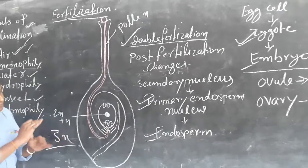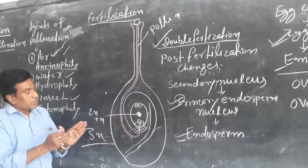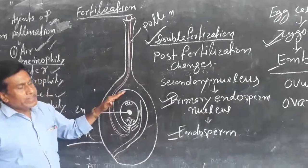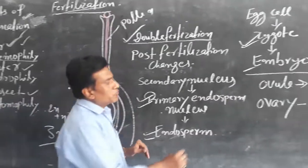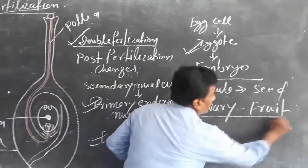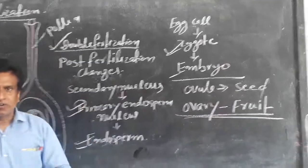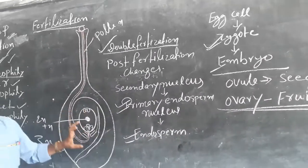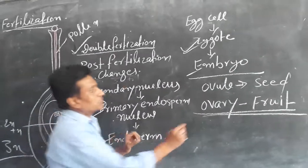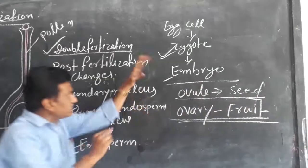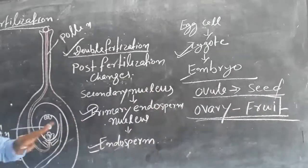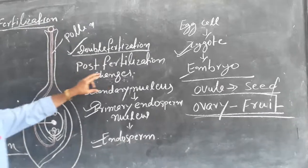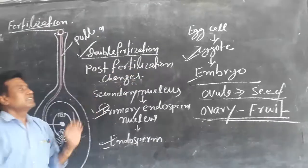After fertilization, this ovary develops into fruit, and this ovule develops into seed. All of these changes are known as post-fertilization changes.